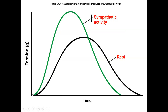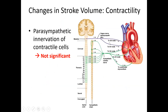Here we can see that at rest, this is the amount of tension or force generated by the cardiac myocyte — the black curve shows a moderate amount of tension over a longer period of time. Under sympathetic influence, because of those four variables, it generates much more force in a shorter amount of time. The parasympathetic influence has no significance for contractility because there is no parasympathetic innervation to the contractile cells.